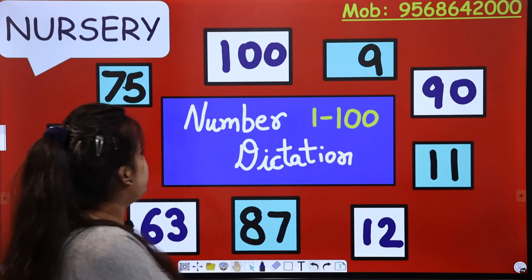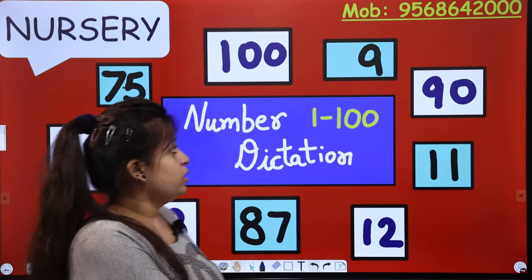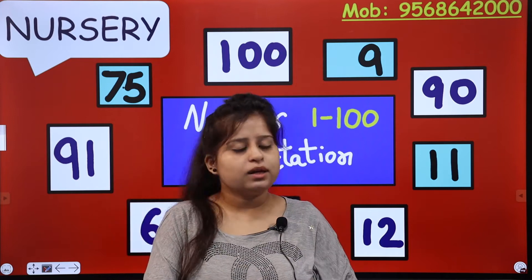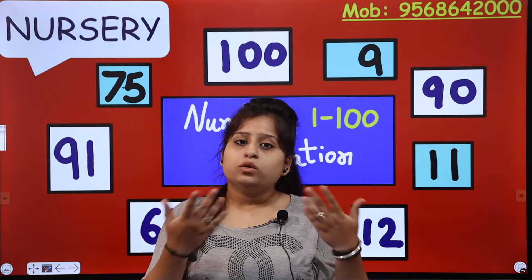We are having number dictation — numbers 1 to 200. These are all numbers, but we won't say all of them. Do you know about dictation? You have to write and cross-check. What are we going to do? It is very simple. How is it interesting?